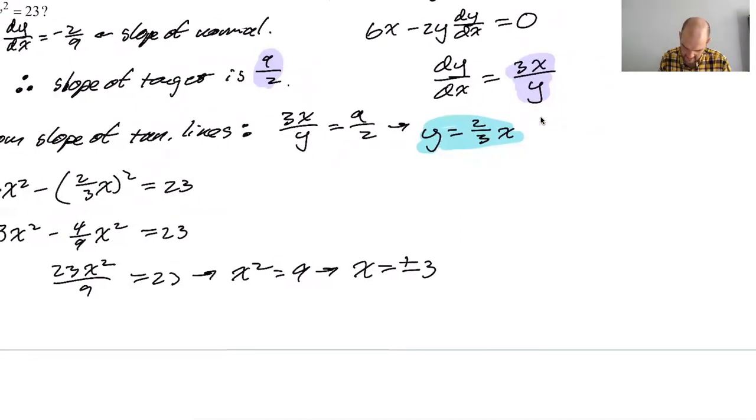So if x is three, if x equals three, then y equals two. If x equals negative three, y equals negative two. Okay.